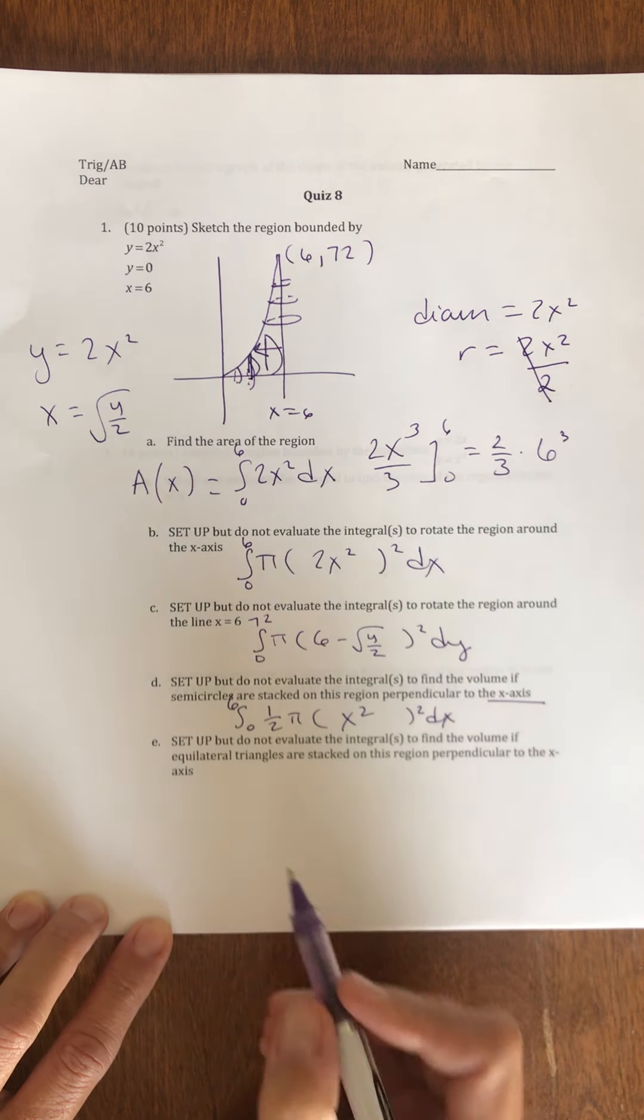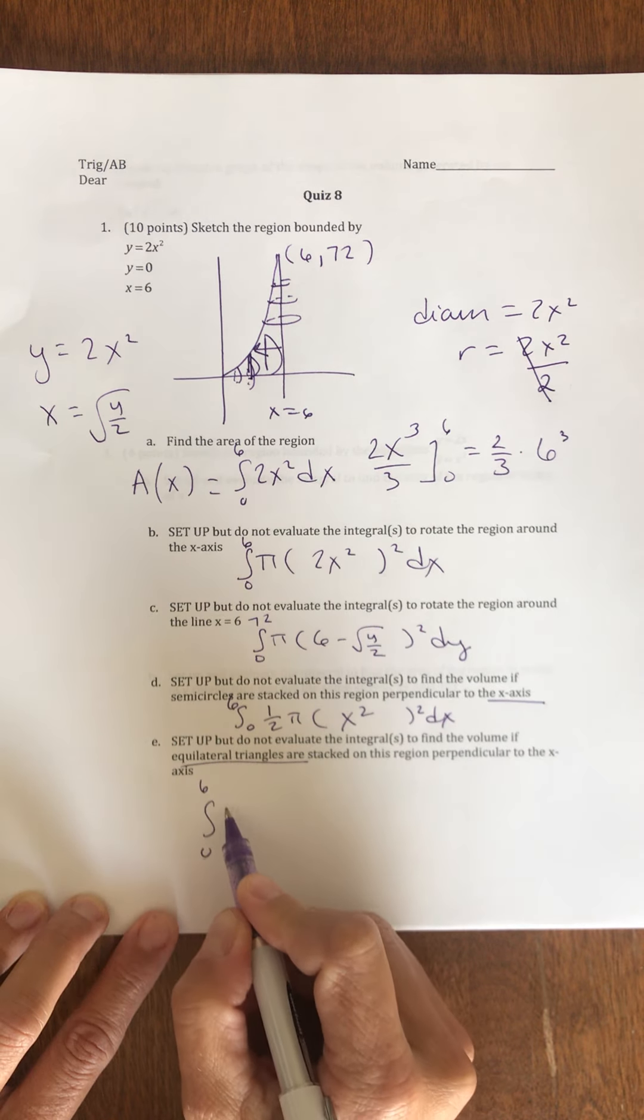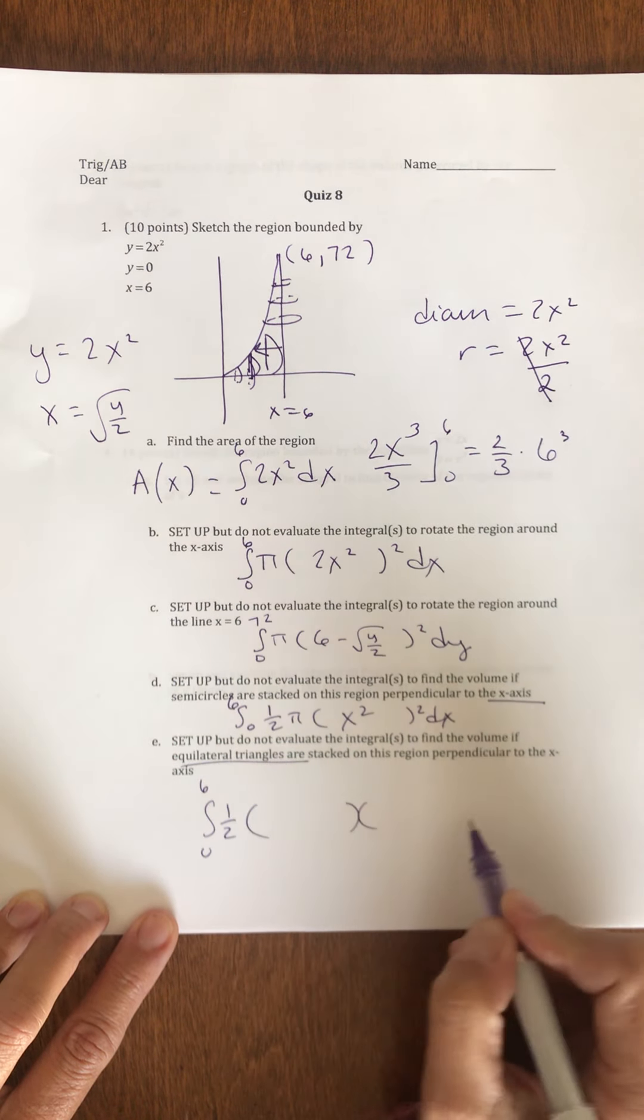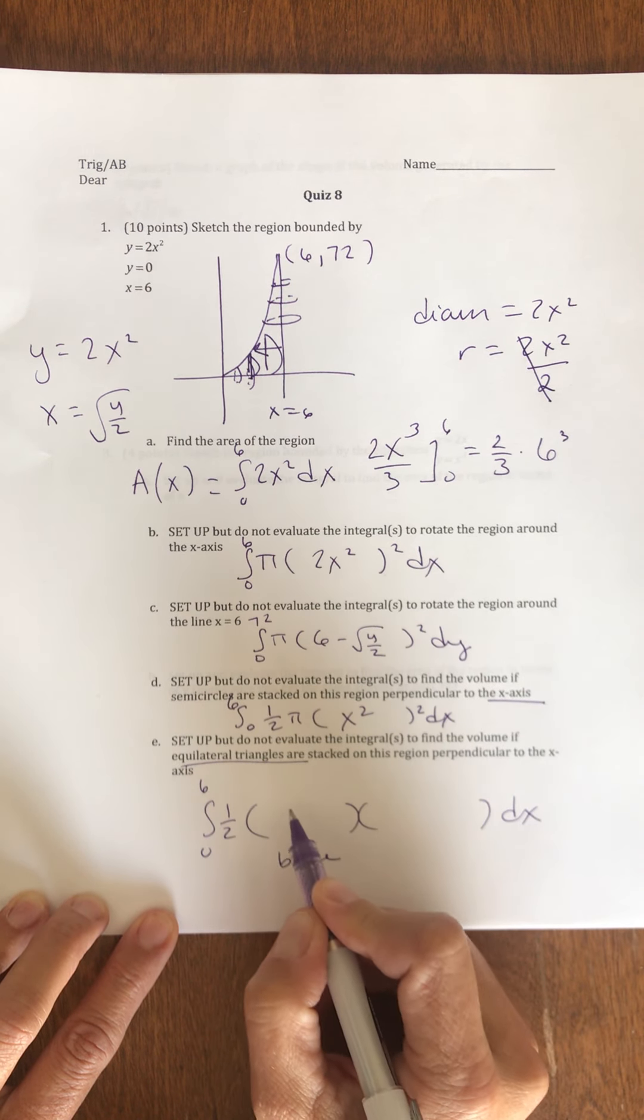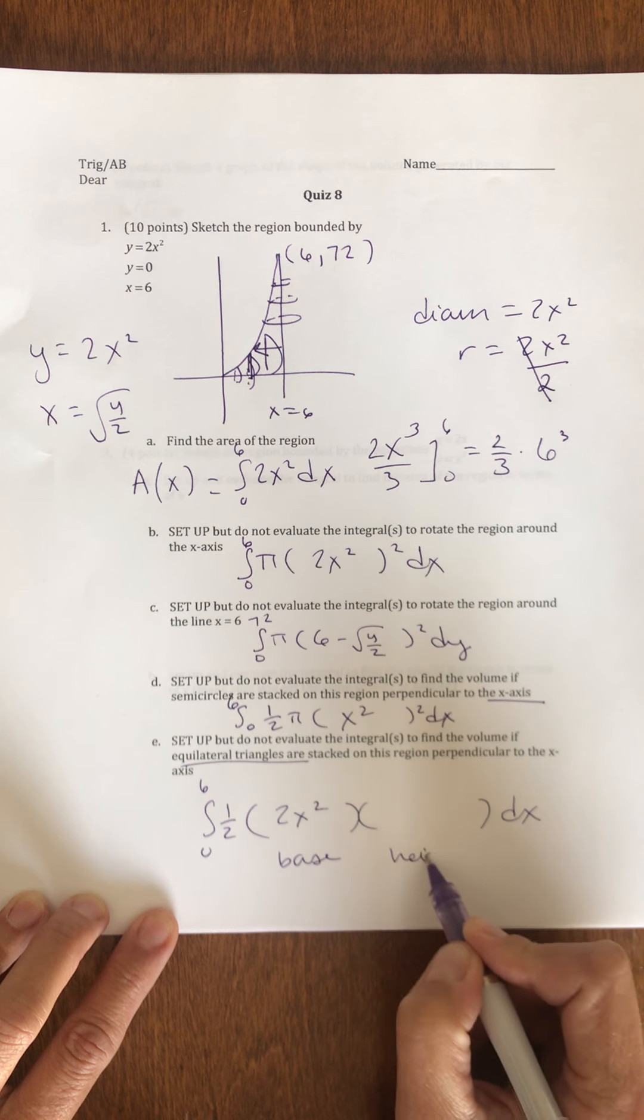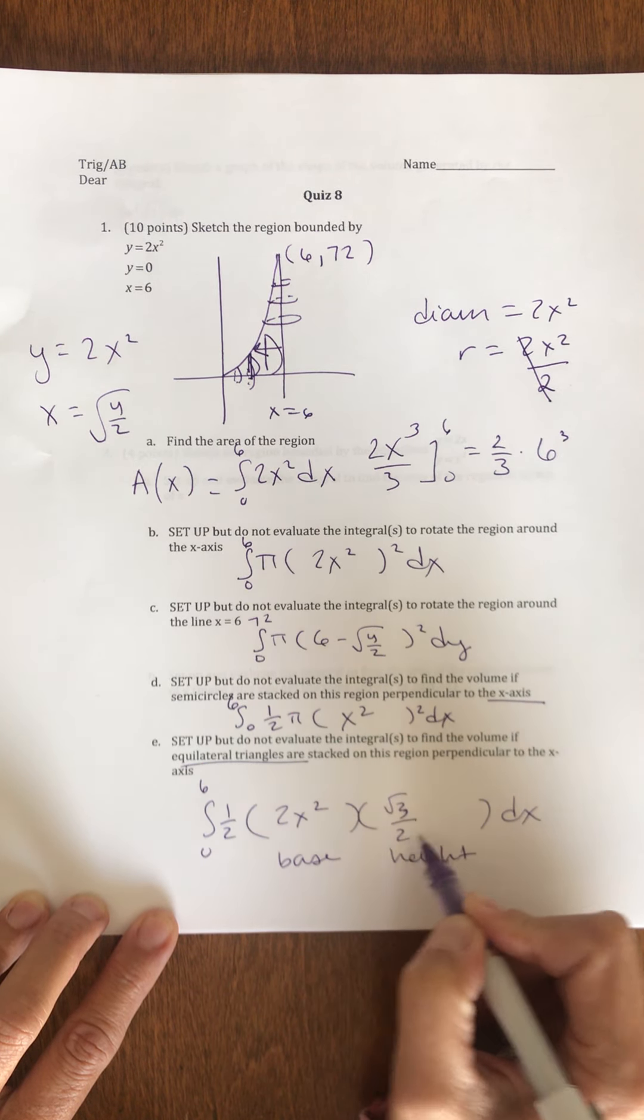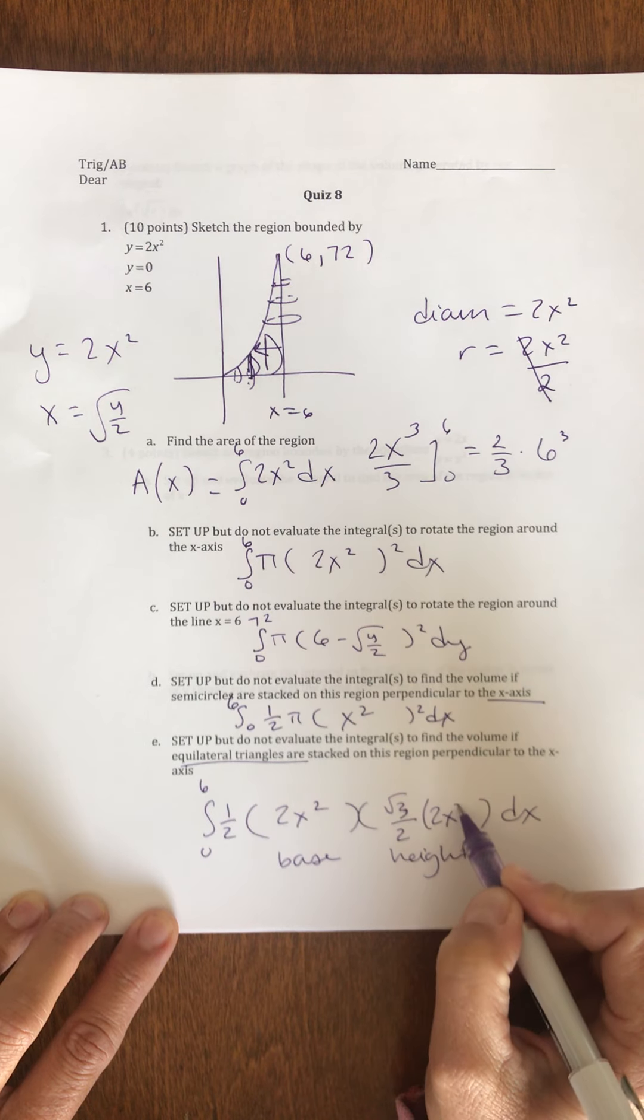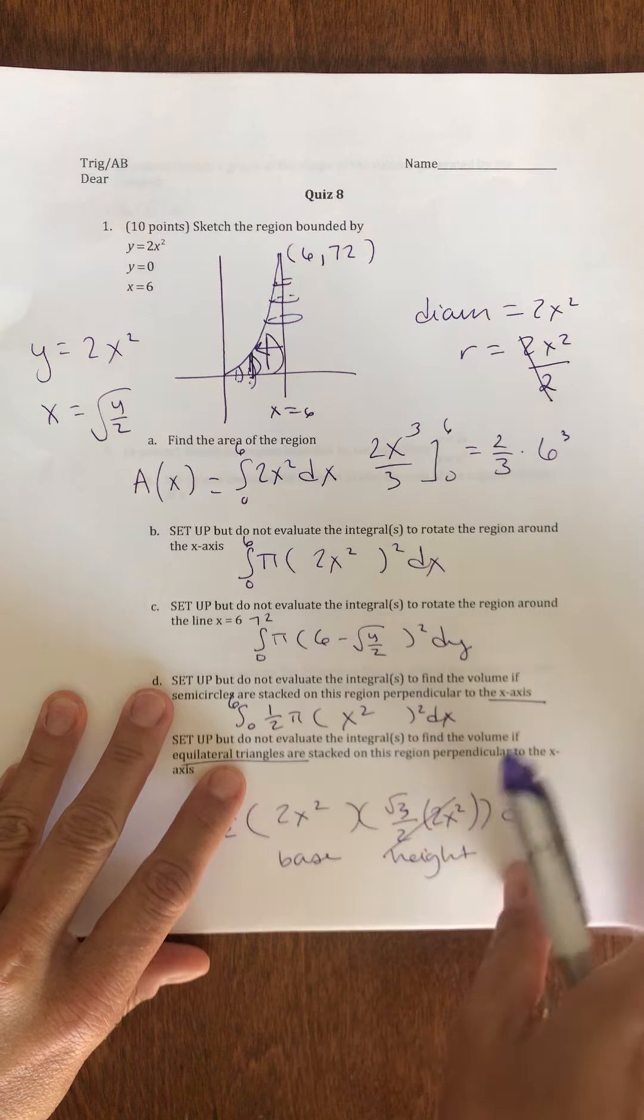And if I stack equilateral triangles, again, my x-values go from 0 to 6. It's going to be 1 half of my base times my height. My base is just 2x squared. The height of any equilateral triangle is rad 3 over 2 times the base. All right, so there's the first page of our quiz.